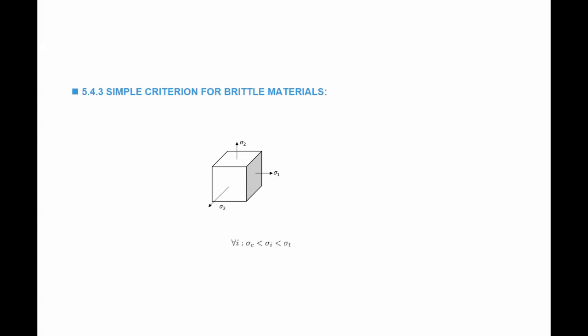The third and last criterion is a simple criterion for brittle materials. It states: find the principal stresses sigma 1, sigma 2, and sigma 3, and make sure that all of them are less than the maximum tensile stress the material can take and greater than the compressive stress it can take. For every i where i is 1, 2, and 3, make sure that sigma_C is less than sigma_i is less than sigma_T, where sigma_T is the tensile strength of that brittle material. For example, if sigma_C is negative 50 MPa and sigma_T is 20 MPa, make sure that sigma 1, sigma 2, and sigma 3 are all between negative 50 and 20.